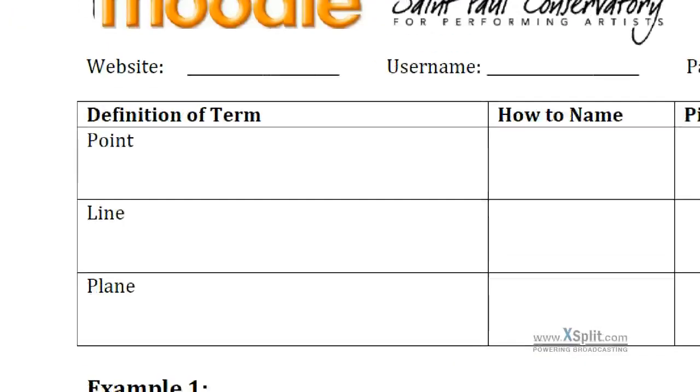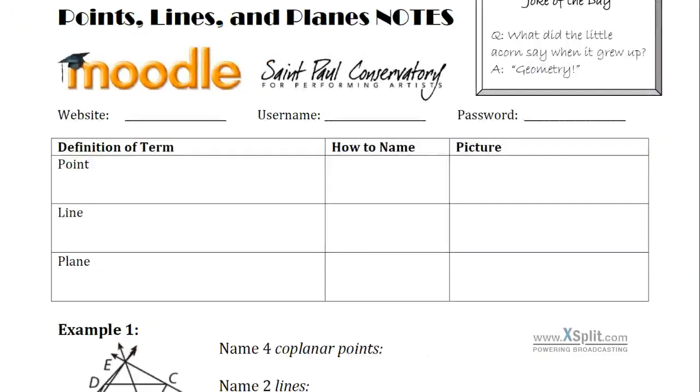We're going to define a few terms first: point, line, and plane, and then draw a few simple pictures. These are probably terms you're familiar with from previous courses and you've honestly been working with them probably since grade school. So point. We start with the point.